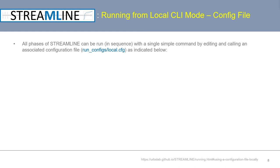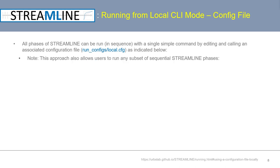Now let's talk about running Streamline locally from the command line using a configuration file to specify run parameters. All phases of Streamline can be run in sequence using a single simple command, where run parameters are specified in an associated configuration file. An example configuration file set up to run the Streamline demo locally can be found in the GitHub repository within the folder run_configs. The local example configuration file is called local.cfg. The configuration file can also be used to run any subset of sequential Streamline phases rather than all phases at once.